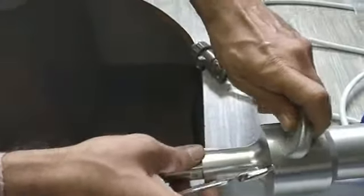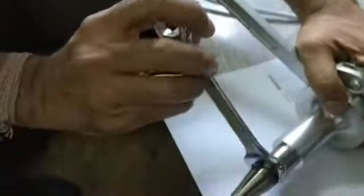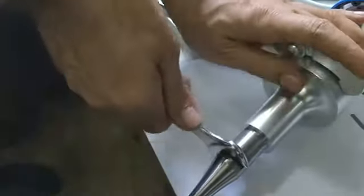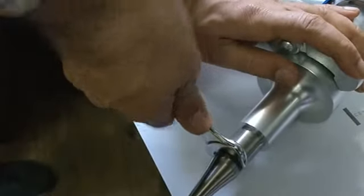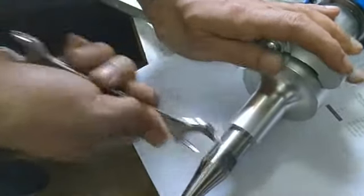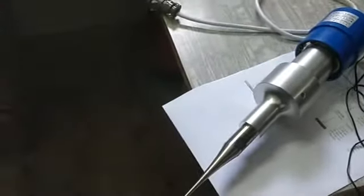Now we will have to change the direction of this if we are tightening it. We will make it in this direction, and now we will tighten it. Make sure it is tight properly. Now we have changed the probe from 6mm to 2mm.